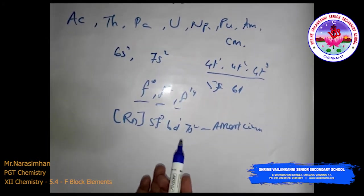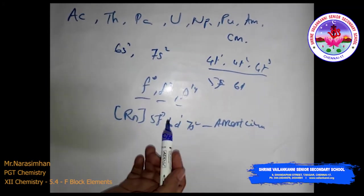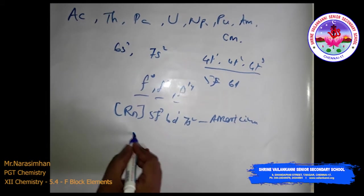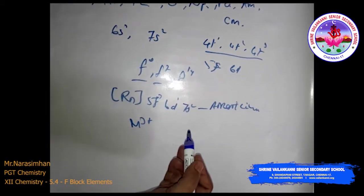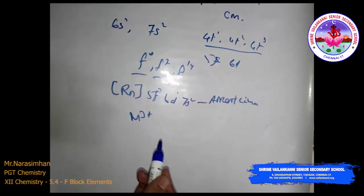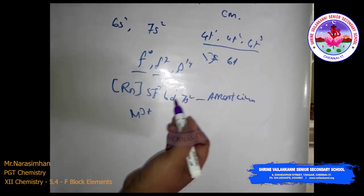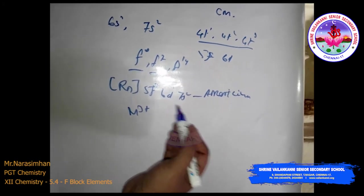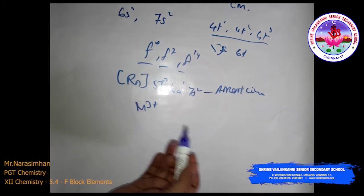Regarding ionic sizes: there is a gradual decrease in the size of atoms and M3+ ions across the actinoid series, which may be referred to as actinoid contraction — similar to lanthanoid contraction. However, this contraction is greater from element to element, resulting in poor shielding by 5f electrons.